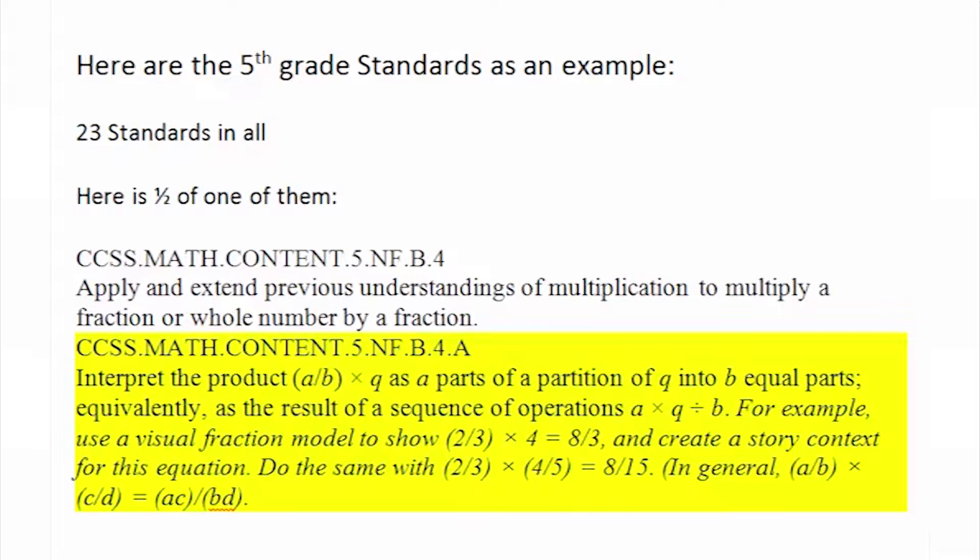Do the same with two-thirds times four-fifths equals eight-fifteenths. Finally, the guts of it. In general, A over B times C over D equals A times C over B times D. Have your eyes glazed over already? Not surprising. This is ridiculously complicated. Welcome to the kind of teaching that the Common Core has spawned.